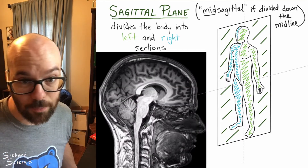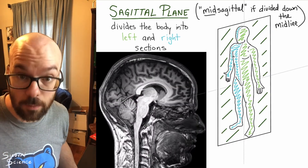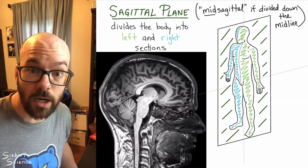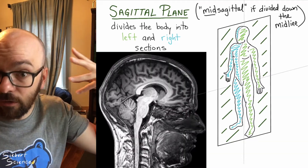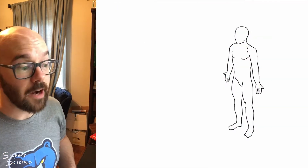Here's another example — a sagittal MRI of a brain. We can tell we're not looking from the front; we're looking from the side. So it must be sagittal.